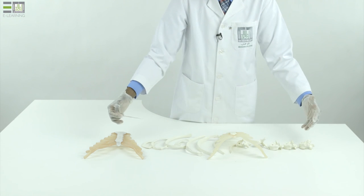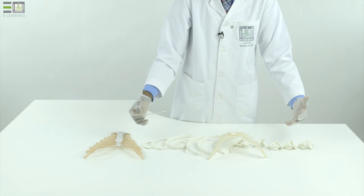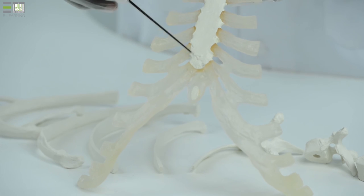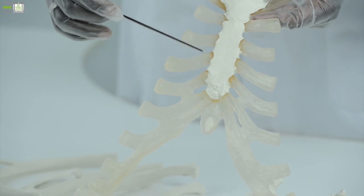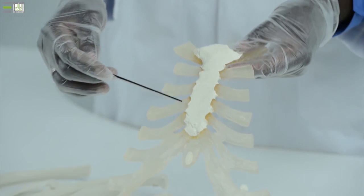All these bones articulate by synovial cartilaginous joint to form our thoracic cage. If we look to the sides of the sternum, we can see the costal cartilages anteriorly, which articulates with the anterior parts of the ribs.